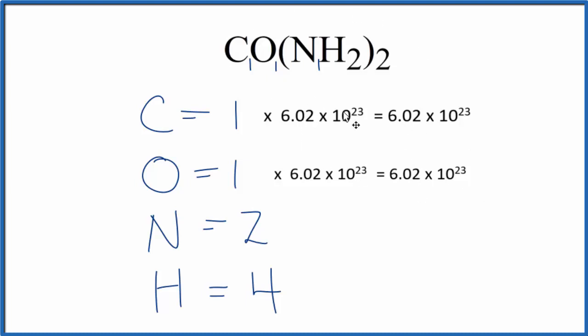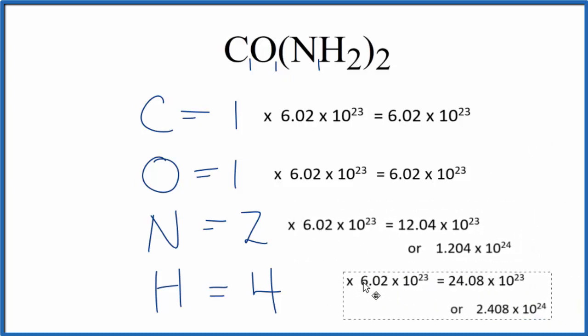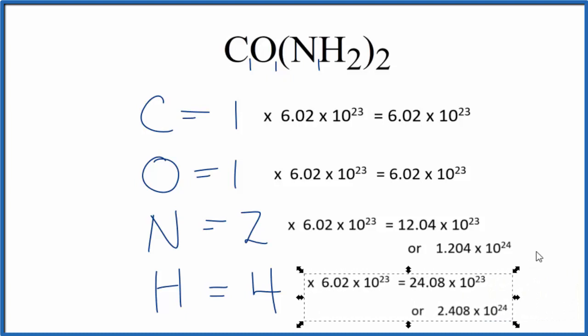For nitrogen, we would multiply by two since we have two nitrogen atoms. And finally for hydrogen, we multiply four times Avogadro's number, and that would give us the number of hydrogen atoms in one mole of urea.